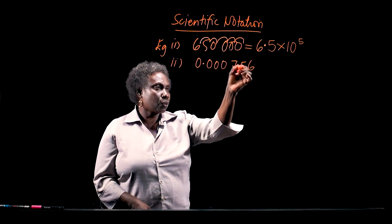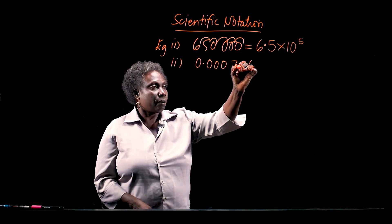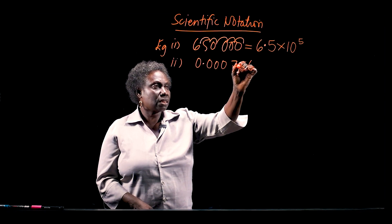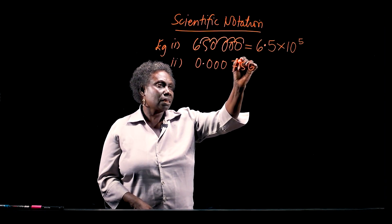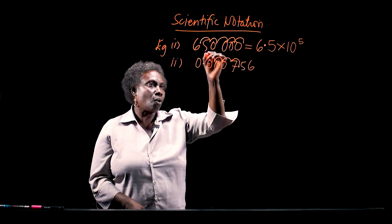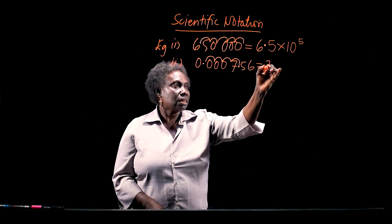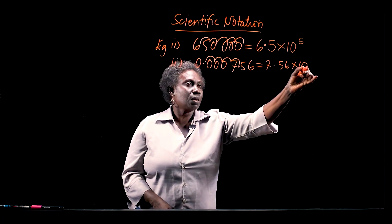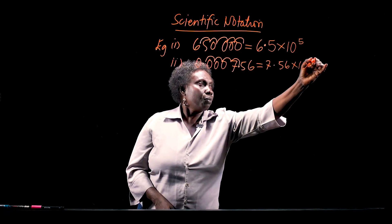In this case, if I put my decimal point between the first and the second significant figure, I count the number of places I move to the left to where the decimal point is. That's 1, 2, 3, 4. I have moved 4 places to the left, so this is going to be 7.56 times 10 to the power of negative 4.